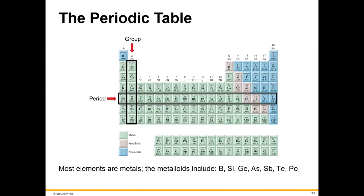Let's talk about the periodic table. On an exam, you will be given a periodic table to use, and in Chemistry and Society you do not have to memorize the symbols for the elements. A vertical column is called a group — sometimes called a family — so this is group one, group two, group three, and so on. And then a period is a horizontal row: period one, period two, period three, et cetera.